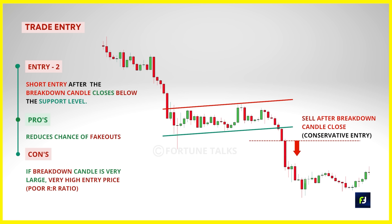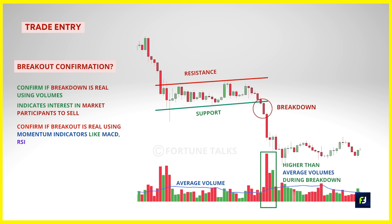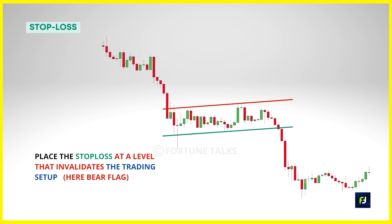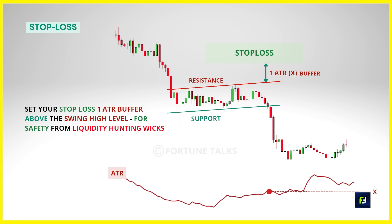Sometimes if the breakout candle is very large, you'll be entering at a very low price and risk-to-reward is affected — so wait for a pullback or retest back to the breakdown trend line and take a short entry when prices start to move lower. The issue is that during a strong downtrend, price won't pull back often and you'll miss most opportunities. Make sure to validate the breakout using volumes and momentum indicators. For stop loss: a bear flag pattern becomes invalid when price breaks above the resistance trend line. Keep the stop loss above the resistance trend line, or for extra safety, give some buffer above the swing high level.